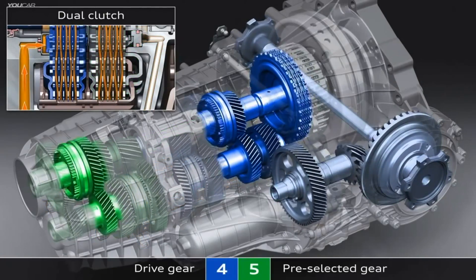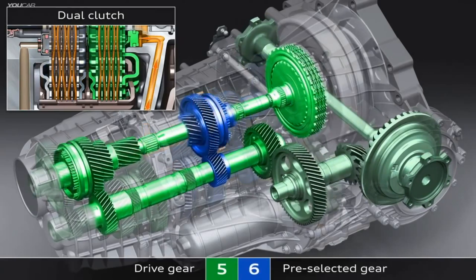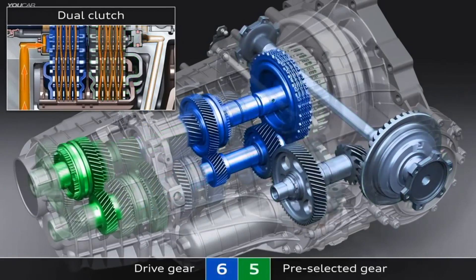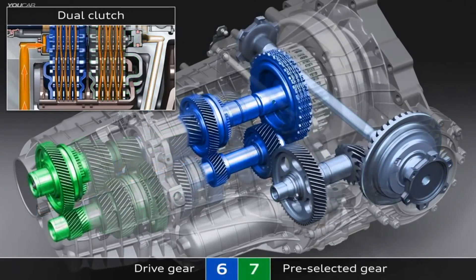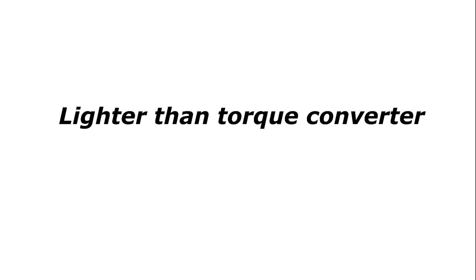This takes place so quick that is why DCT transmissions are smooth yet they provide quick shifts. Pros: it is smooth, provides faster shifts, and is lighter than normal automatic transmissions. Cons: it is not as reliable as regular automatic transmissions and it costs more to manufacture.